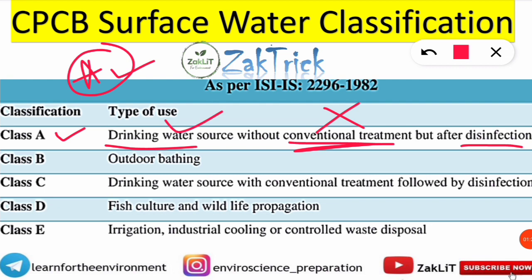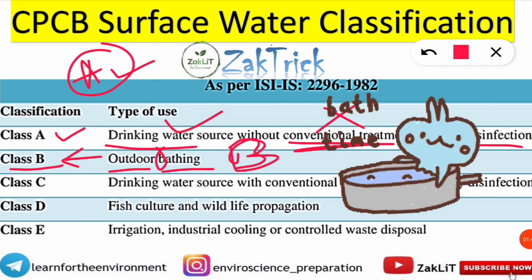Next, Class B is used for outdoor bathing. The first alphabet of 'bathing' is B, so it belongs to Class B. Surface water under Class B can be used for outdoor bathing purposes — B for bathing, B for Class B.